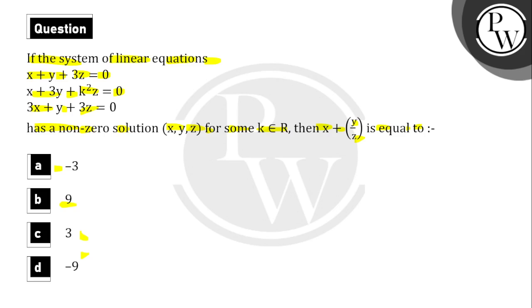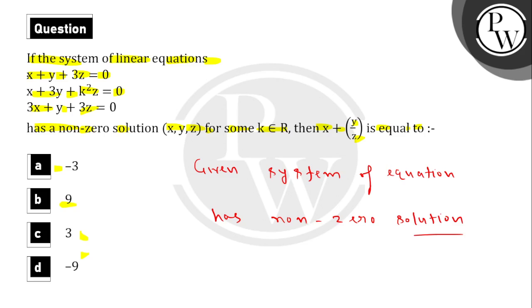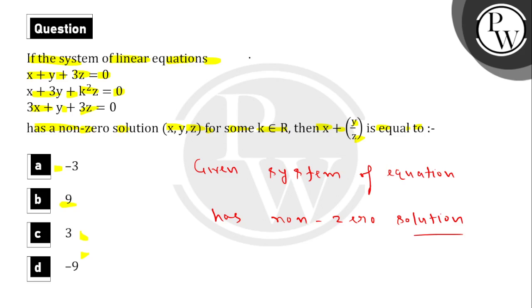It means the matrix, the system of equations has non-zero solution. This implies the determinant of the matrix determinant 1, 1, 3; 1, 3, k squared; 3, 1, 3. This determinant equals 0.